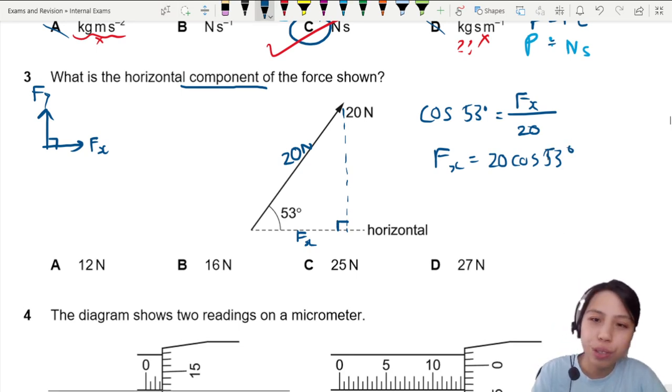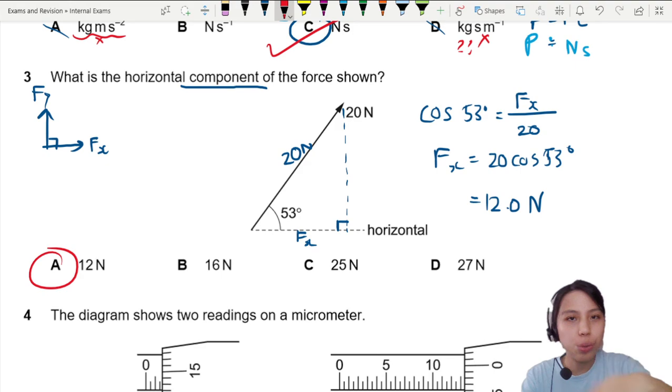You should get, at the end, about 12 Newtons. 12.0 Newton. So this one, A. That's how you can split up a force into its two components.